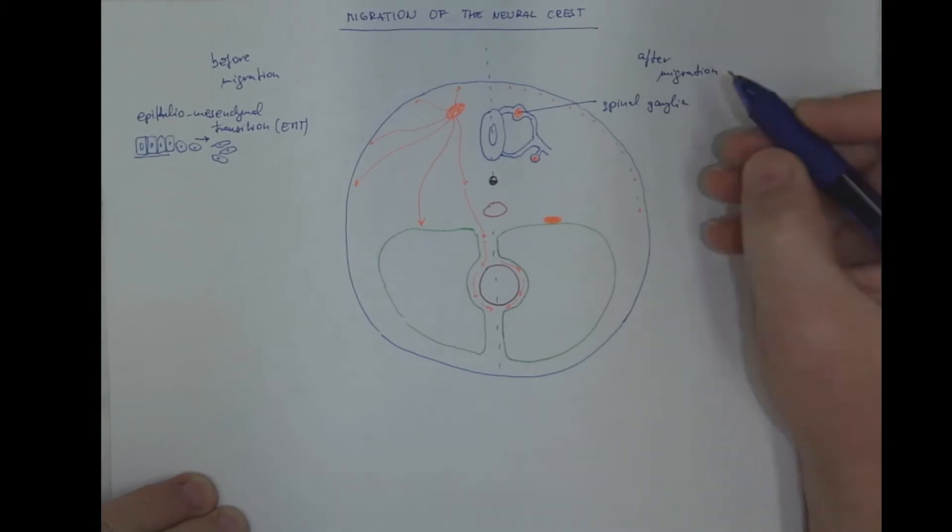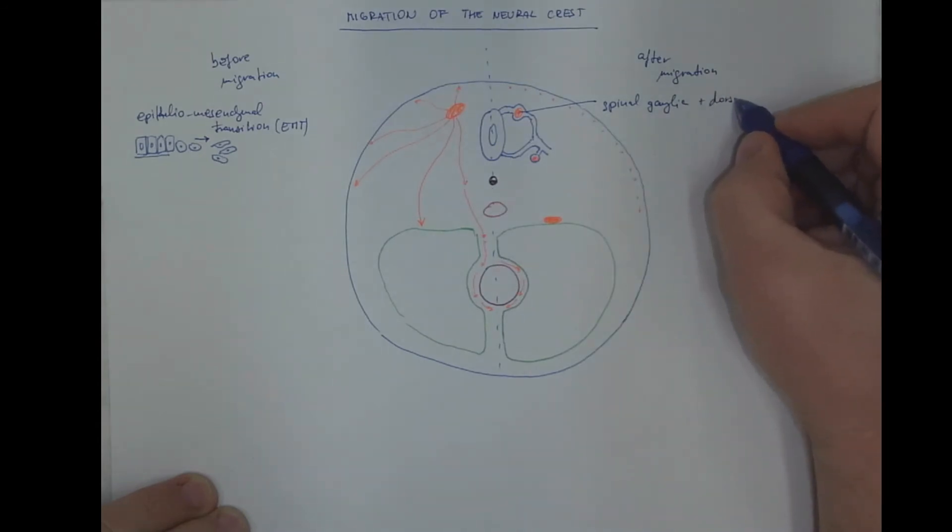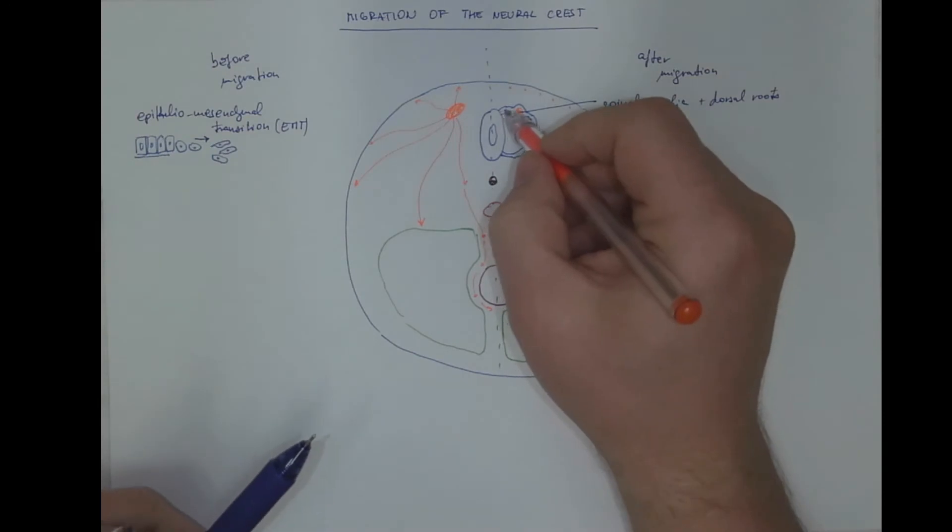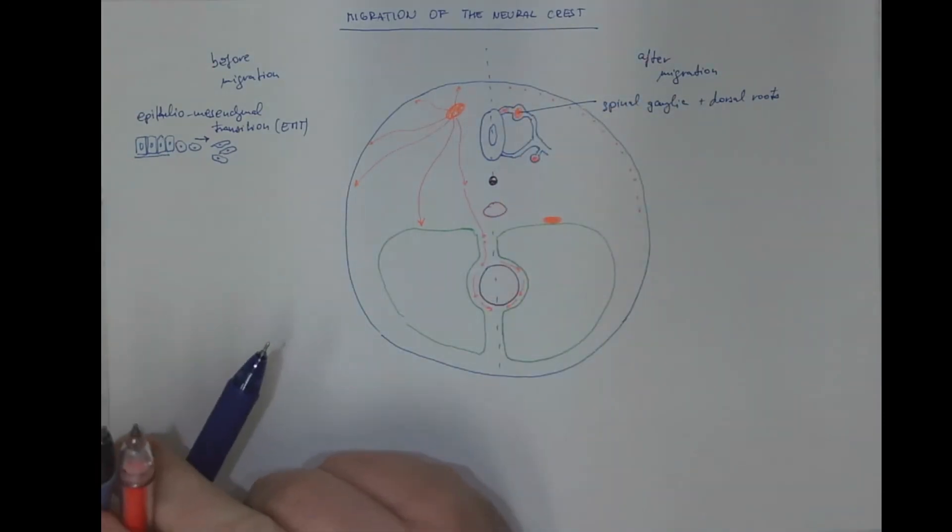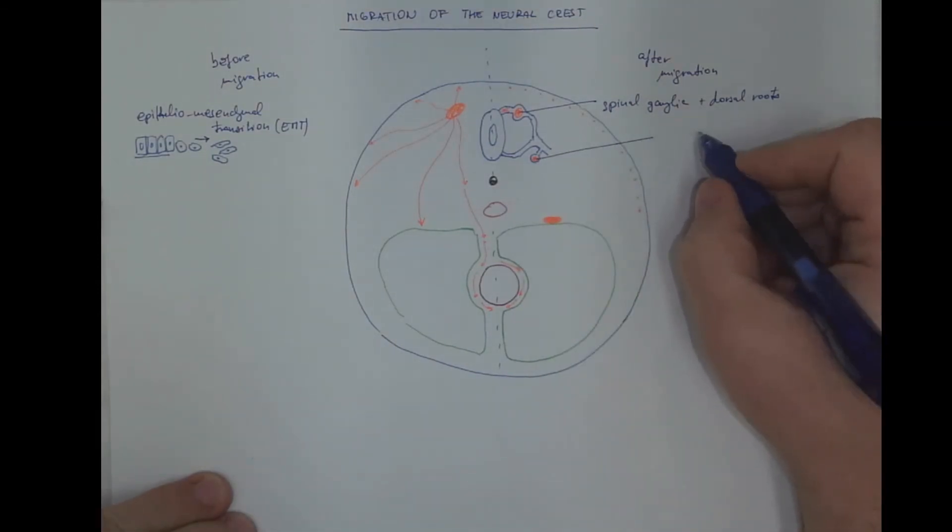All the spinal ganglia, actually, and the dorsal root of the spinal cord—sorry, dorsal roots of the spinal nerves. Here we are with the sympathetic ganglion.